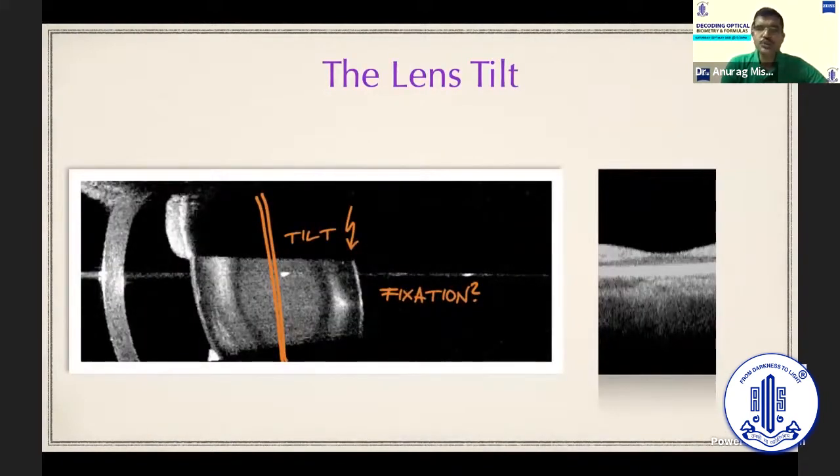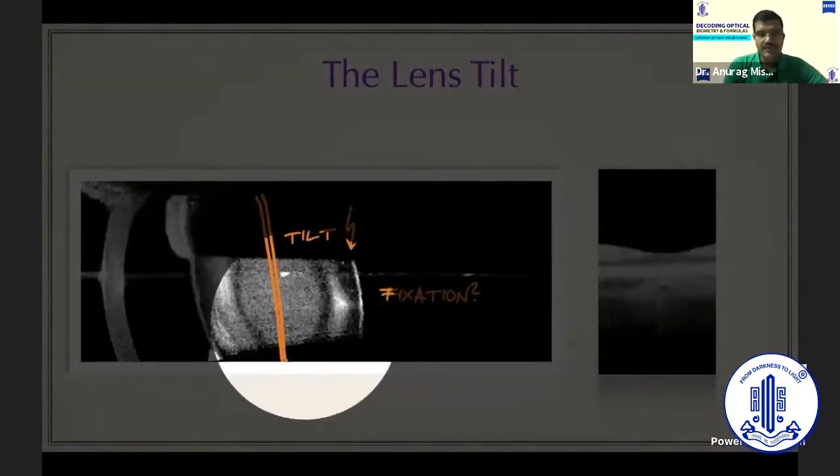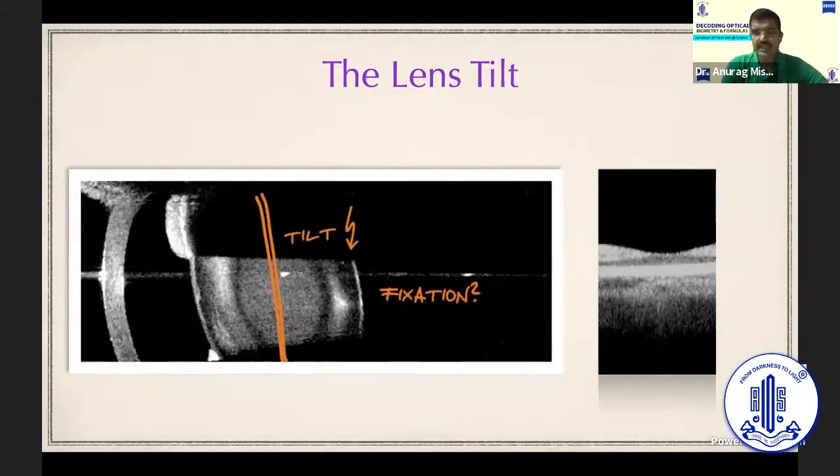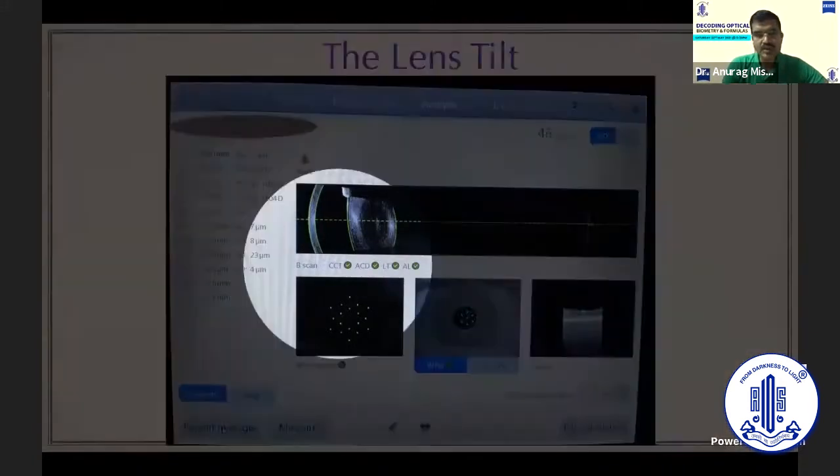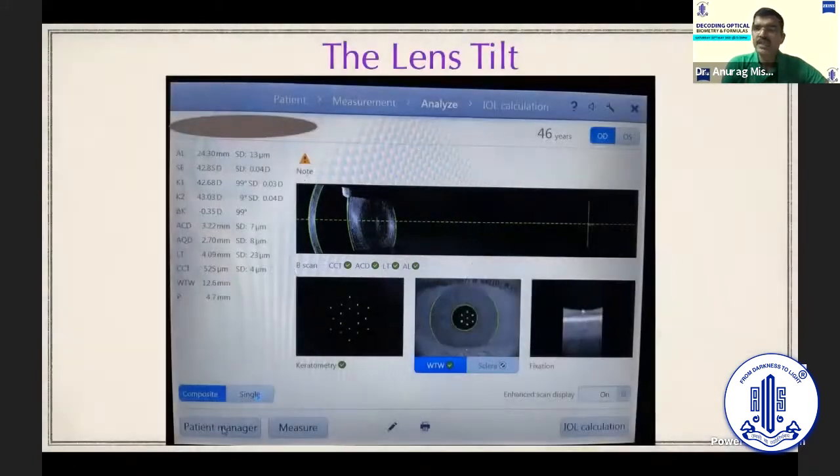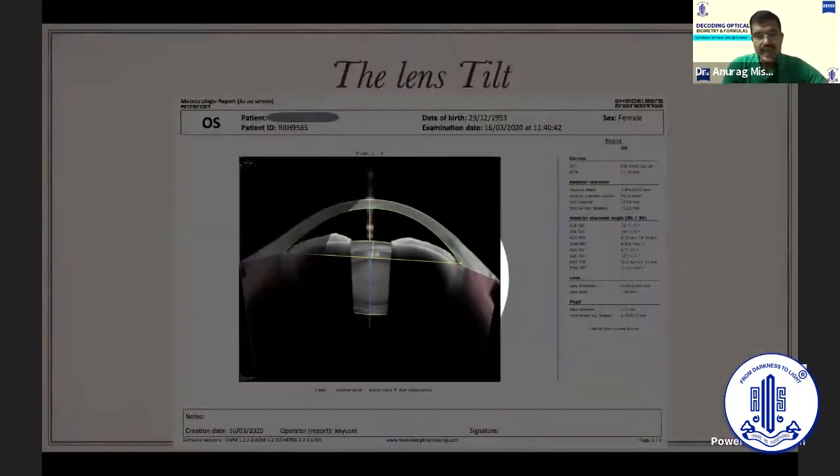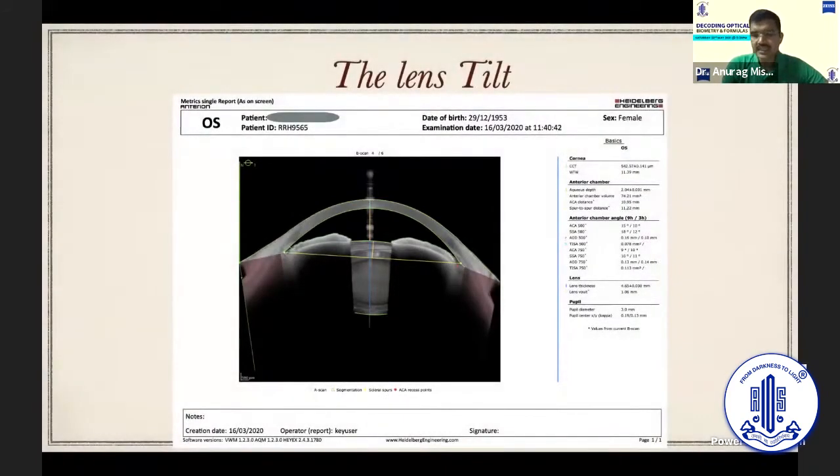The 700 also gives us a clue to the IOL tilt. Remember, if the lens shows a little bit of tilt and you have a doubt, and with that the foveal pit does show a good fixation, you should always suspect a lens tilt. That's what happened in this patient of mine. I did have my doubts about this particular IOL being in position. I did an anterior segment OCT which also showed that the axis of the lens is not corroborating with the axis of the eye. It's a little tilted.